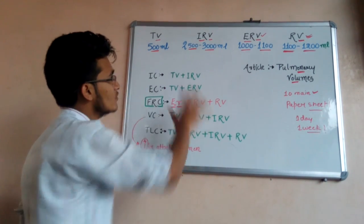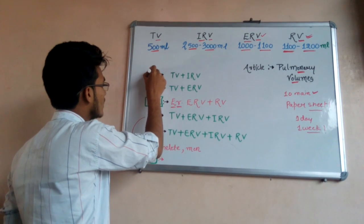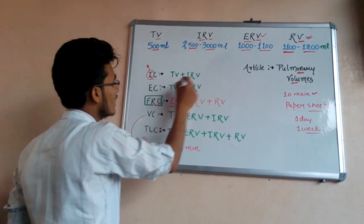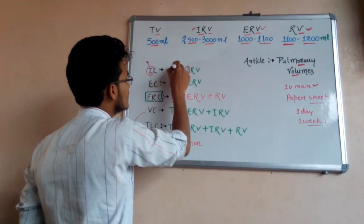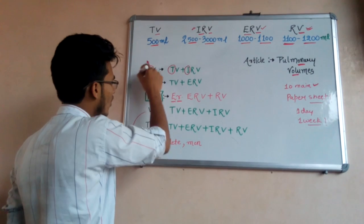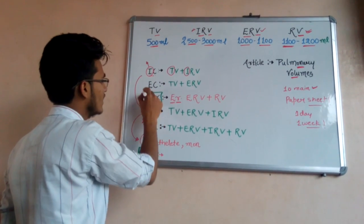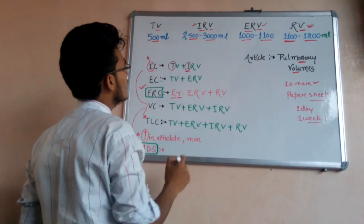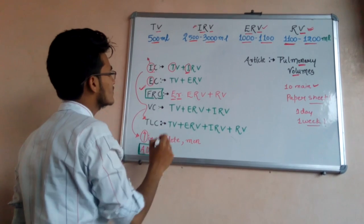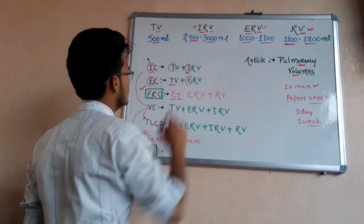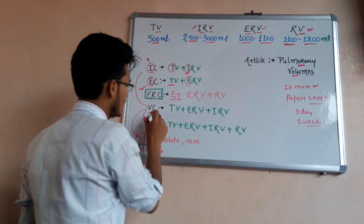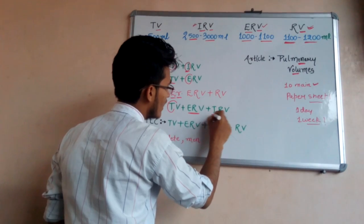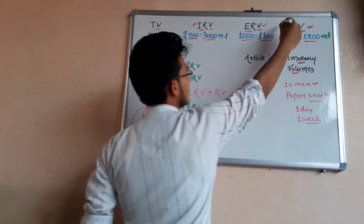We will derive all remaining respiratory capacities from these four volumes. IC — inspiratory capacity — uses IRV plus TV, since 'I' stands for inspiratory, so we use IRV here. EC — expiratory capacity — uses TV plus ERV. VC — vital capacity — is the sum of TV, ERV, and IRV; we use all respiratory volumes except RV. TV is constant across all these derived capacities except FRC, which is marked separately.